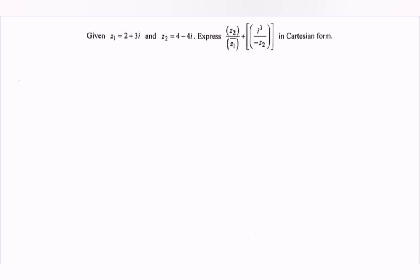Hello everyone, in this video I'm going to discuss an example for complex numbers. Given z₁ = 2 + 3i and z₂ = 4 - 4i, express z₂ over the conjugate of z₁ plus i³ over negative z₂ in Cartesian form, meaning a + bi.